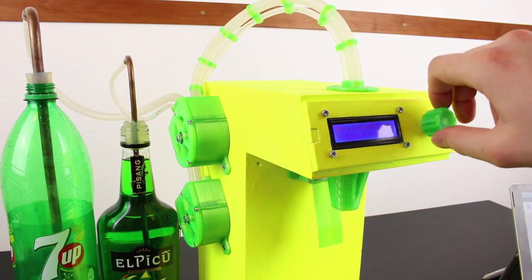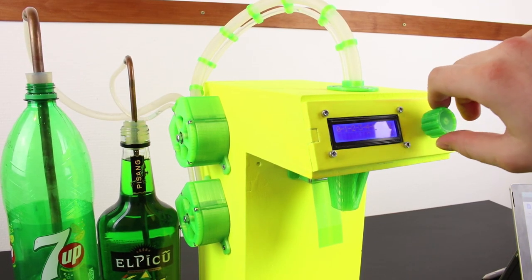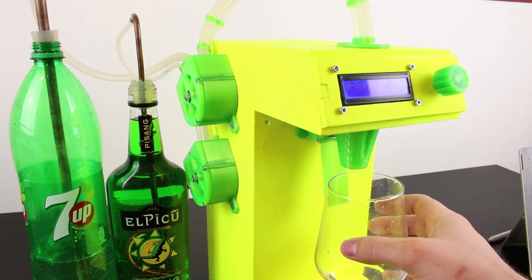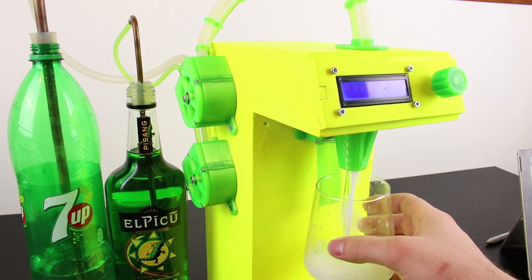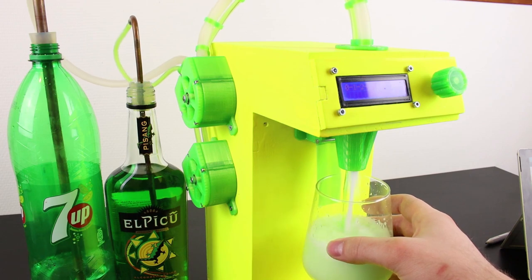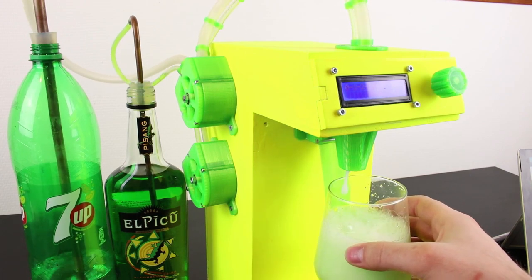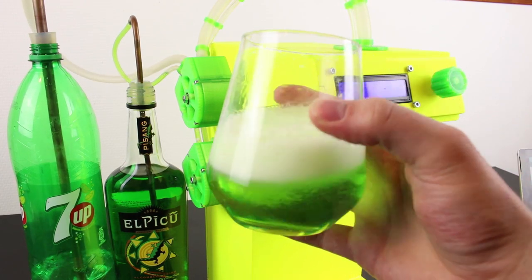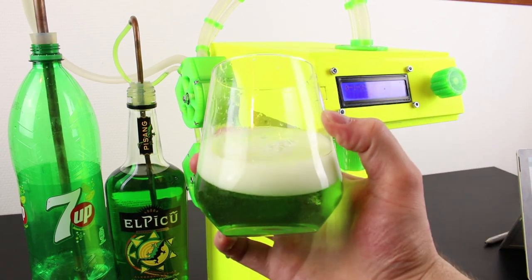In order not to end the video sober let's turn up the intensity to level 4 and fill up our glass. Now the drink looks like toxic waste so we know at least the mixing works.